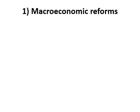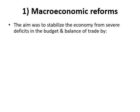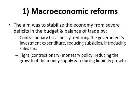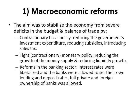The first component is macroeconomic reforms. The aim was to stabilize the economy from severe deficits in the budget and balance of trade through contractionary fiscal policy — reducing the government's investment expenditure, reducing subsidies, and introducing a sales tax. Also through tight monetary policy, reducing the growth of money supply and reducing liquidity growth.